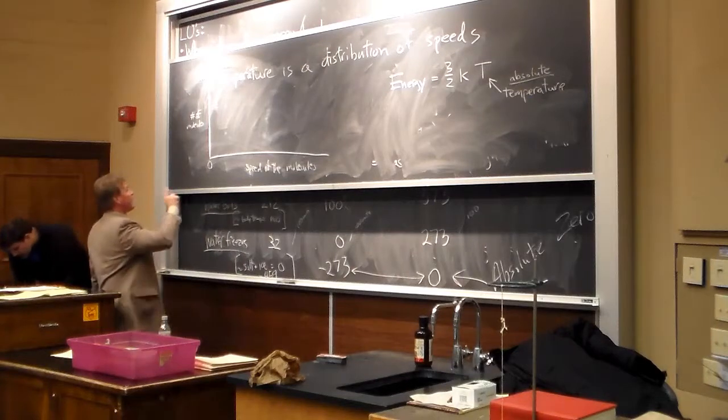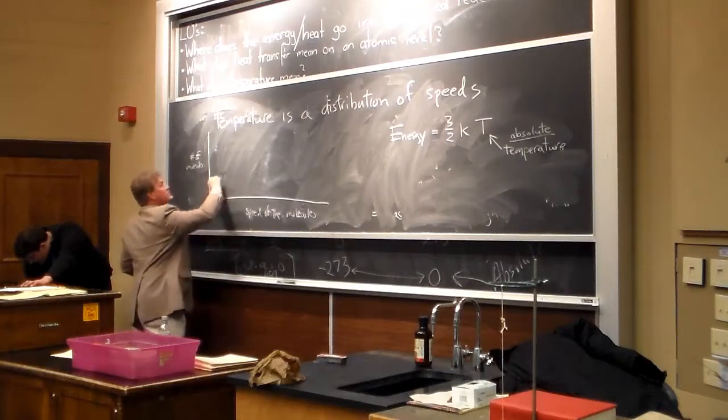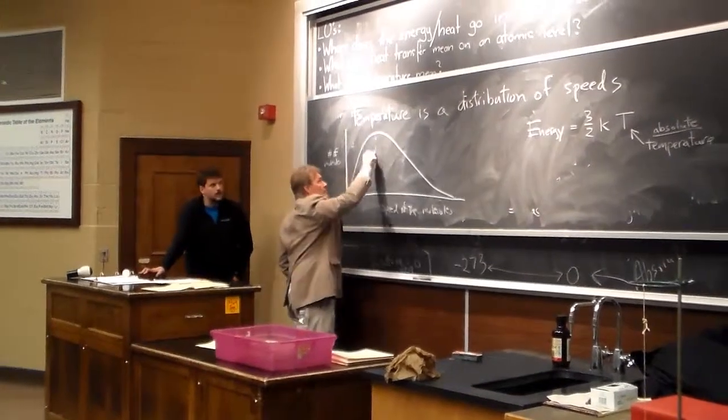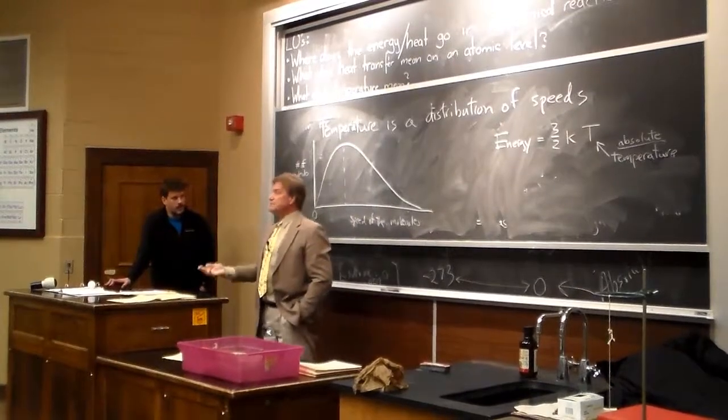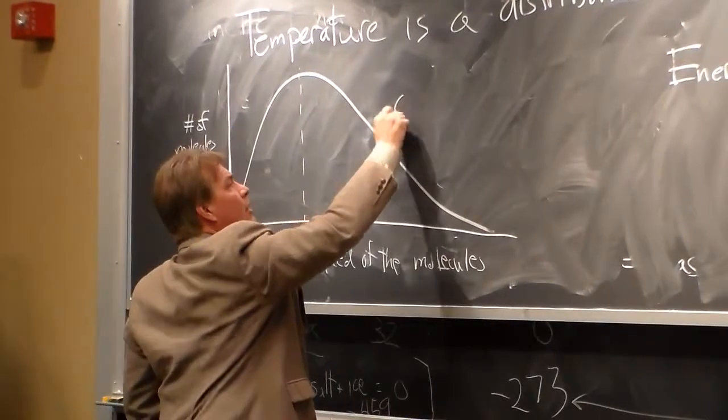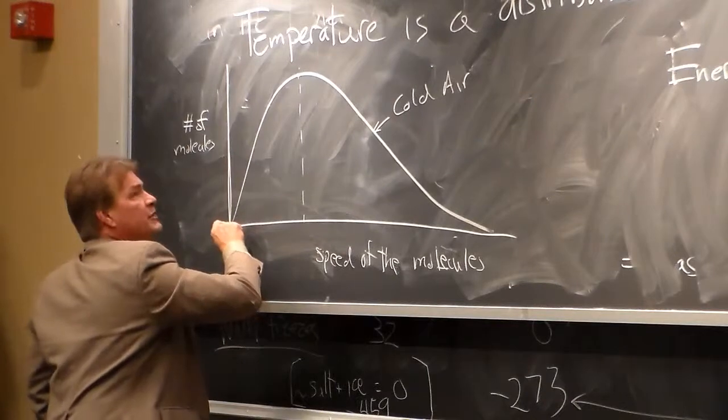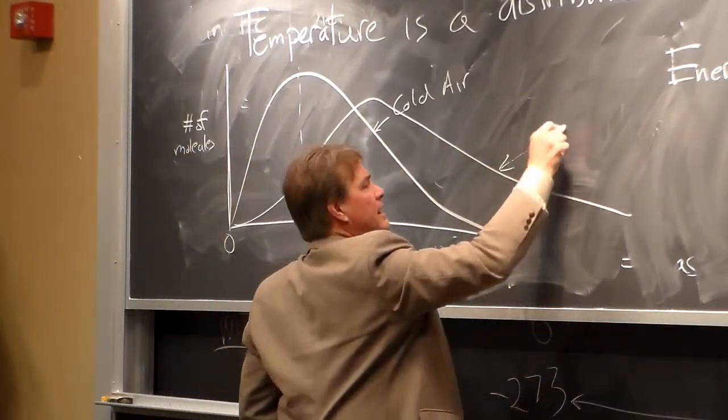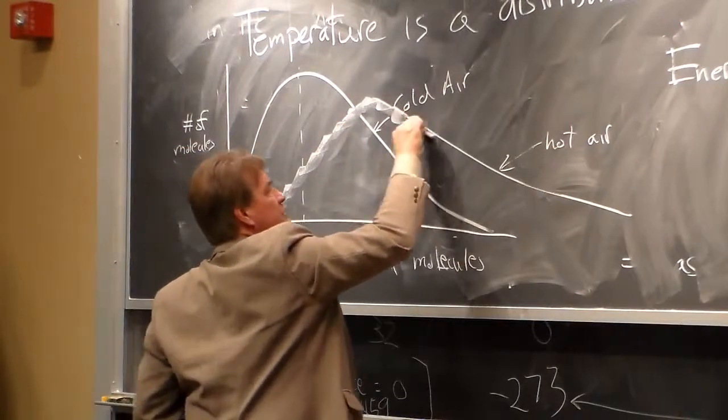This graph for the air temperature looks something more like that. Right here, this is sort of the average, the mean speed, right? Temperature goes with this. This might be for cold air. And a graph of the speeds for hot air might look like this. Hot air.